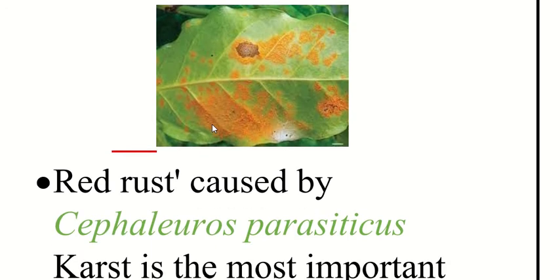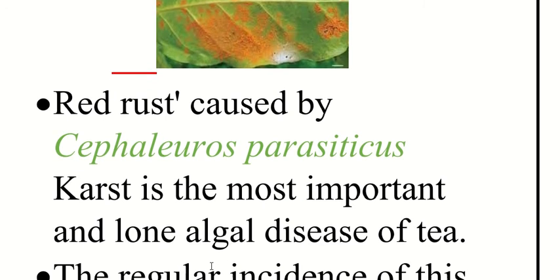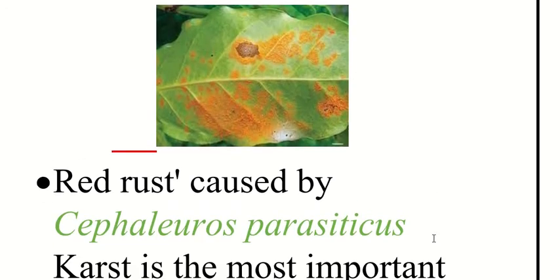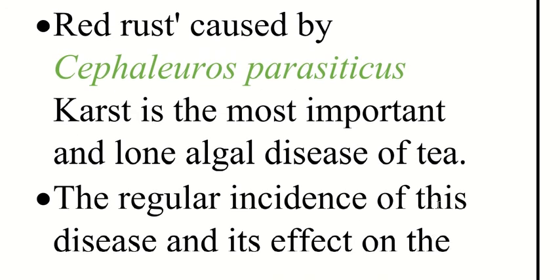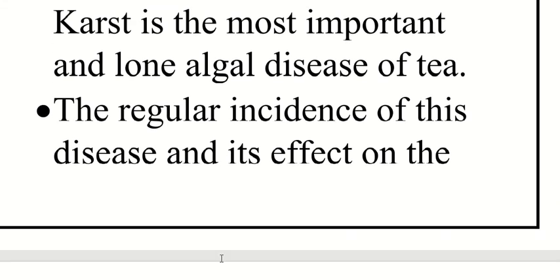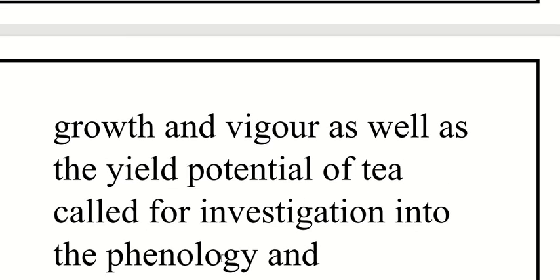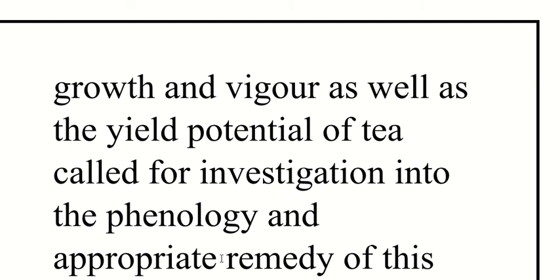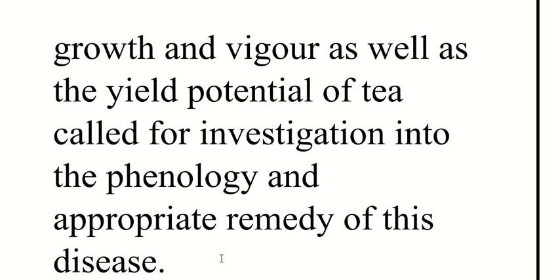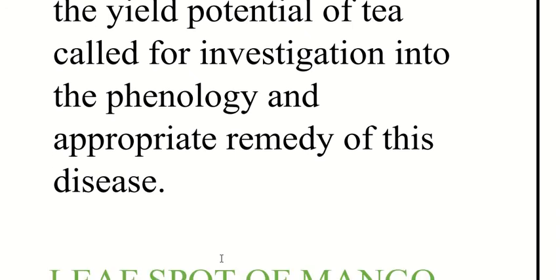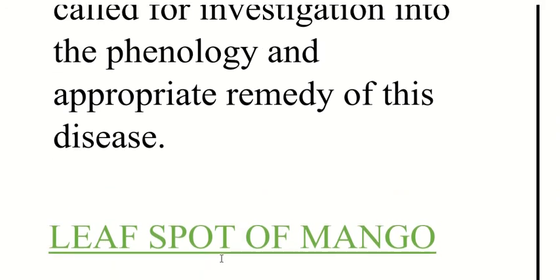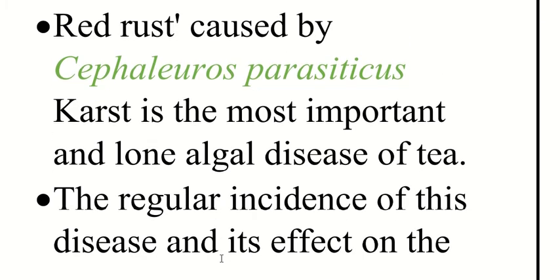Red rust of tea is caused by Cephaleuros parasiticus. It is the most important and long-known algal disease of tea. The regular incidence of this disease and its effect on the growth, vigor, and yield potential of tea has called for investigation into its phenology and appropriate remedies.